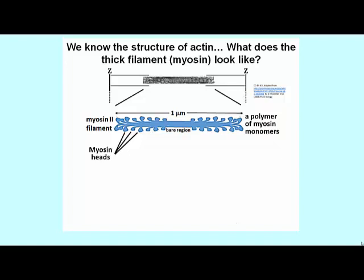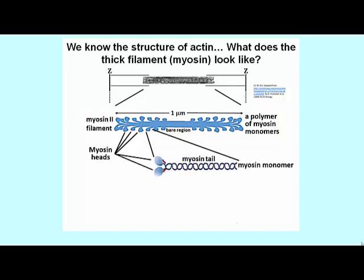The myosin thick filament is a polymer of many myosin monomers. Each myosin monomer has two heads — the two structures at the left in this illustration.